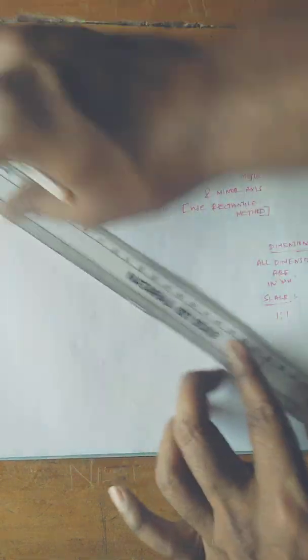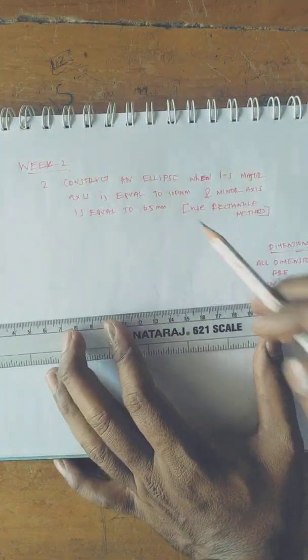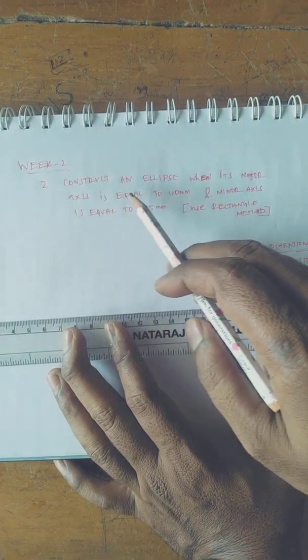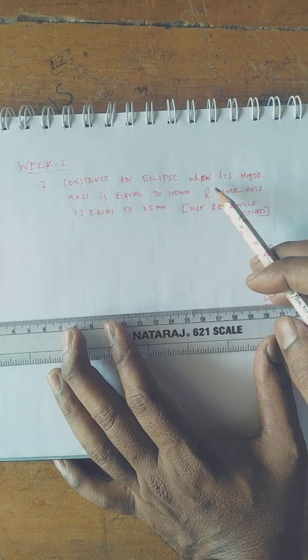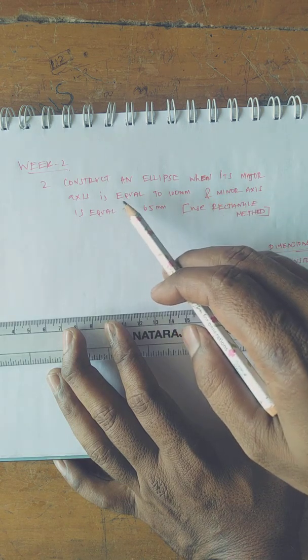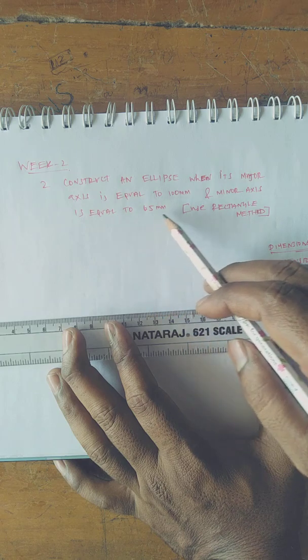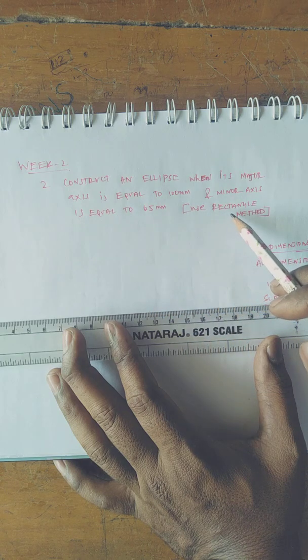Good morning students. The next problem, which is from week 2, is to construct an ellipse when its major axis is equal to 100 mm and minor axis is equal to 65 mm using the rectangle method.